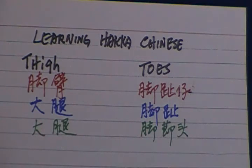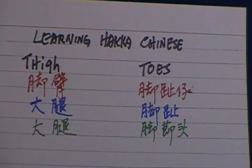Toes. Toes in Hakka Chinese is Gio Gji Zai. In Mandarin is Jiao Zi. And in Shanghainese dialect is Jia Ji Du. Gio Gji Zai in Hakka Chinese, Jiao Zi in Mandarin, Jia Ji Du in Shanghainese dialect.